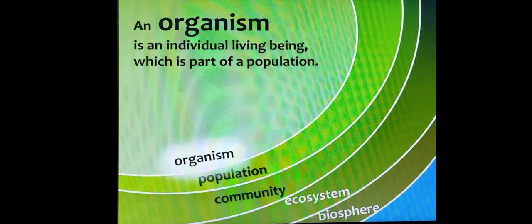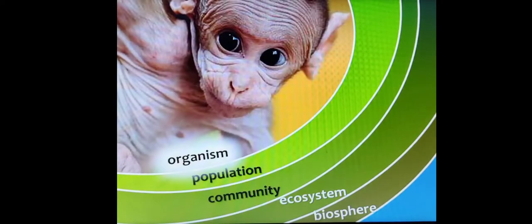Then organism. An organism is what a population is made of. Monkey, human, coconut tree — these are different organisms or different species. A monkey is a specific species, or a specific organism.